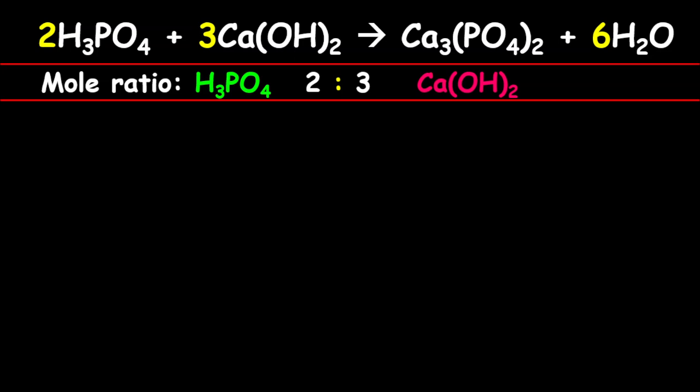Now the next thing I want to do is quickly remind you of the formula. The formula is MAVA divided by nA equals MBVB divided by nB.